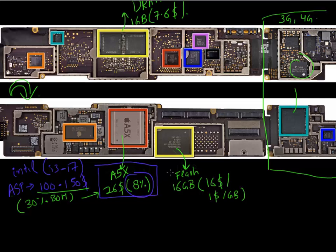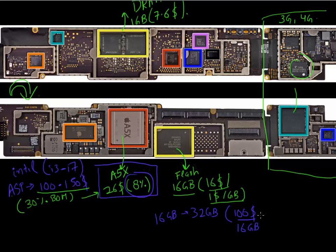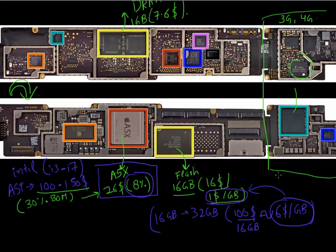Another quick point about flash memory: 16 gigabytes costs $16, or $1 per gigabyte. But if you buy flash from Apple — for example, upgrading from 16 to 32 gigabytes — they charge you $100 for that extra memory, which is approximately $6 per gigabyte. So the actual price of flash memory is only $1 per gigabyte, and there's a running joke that it's much more expensive to buy flash from Apple compared to buying it from a flash memory vendor like SanDisk.